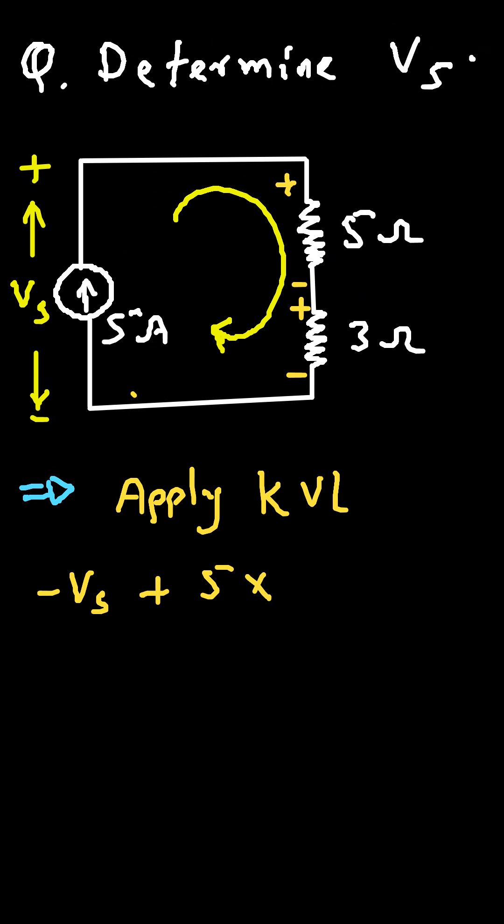So 5 into 5, then plus 3 which is the value of resistance multiply with current value which is again 5, so 3 into 5. Now this is equal to 0, so this is the definition of KVL.